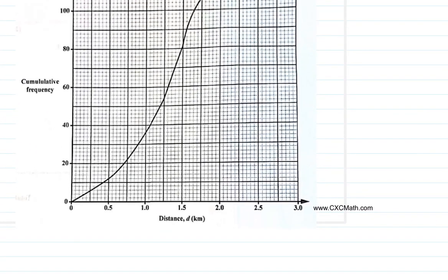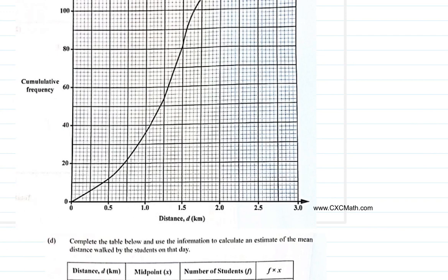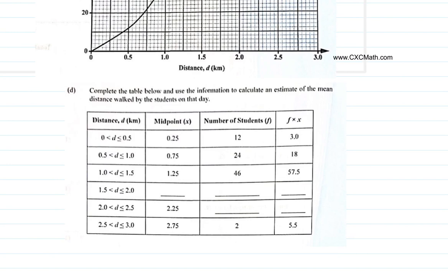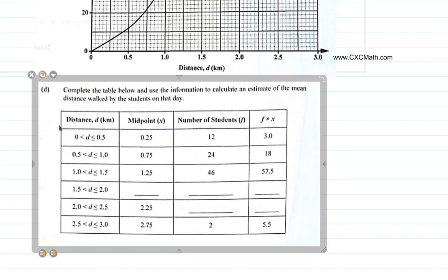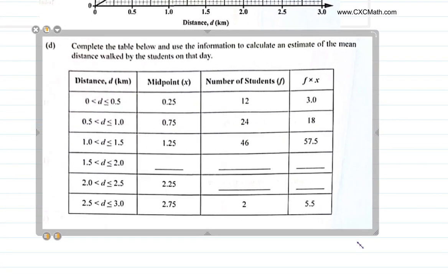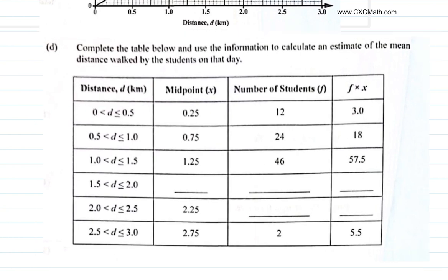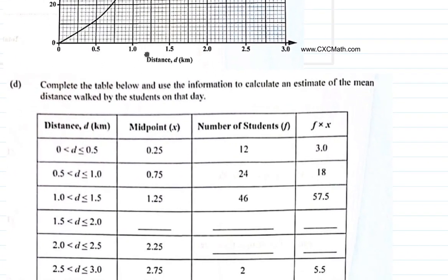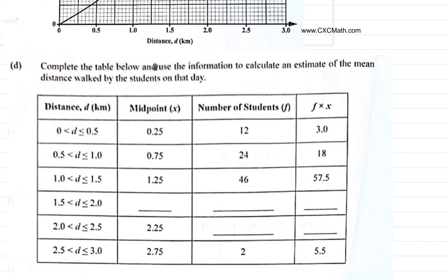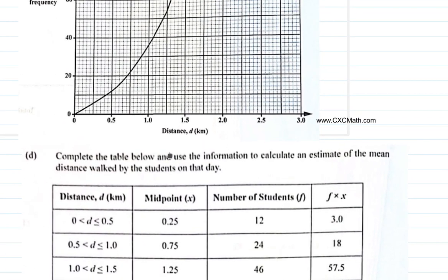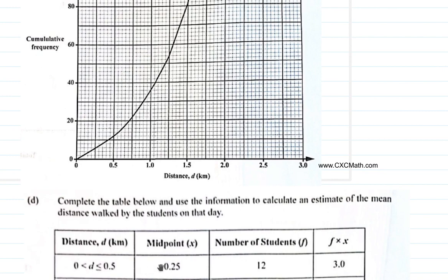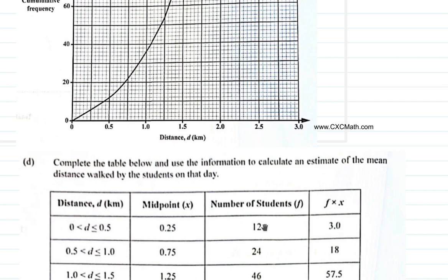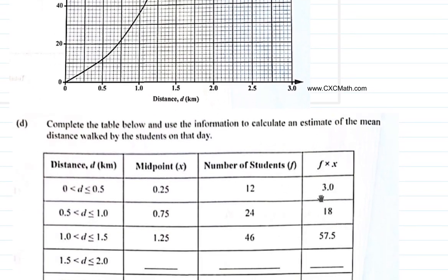I think it would be good if we expand this table so we can have enough space to write. Complete the table below and use the information to calculate an estimate of the mean distance walked by the students on that day. The first interval is 0 to 0.5, the midpoint is 0.25, number of students is 12, and F times X is 0.25 by 12 — that's a quarter by 12 — which is 3.